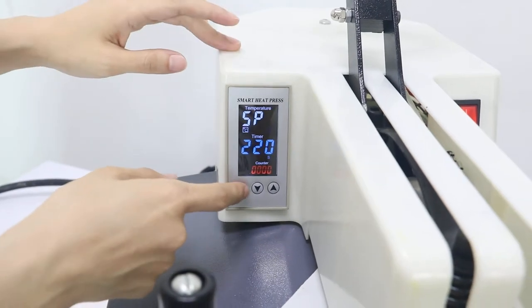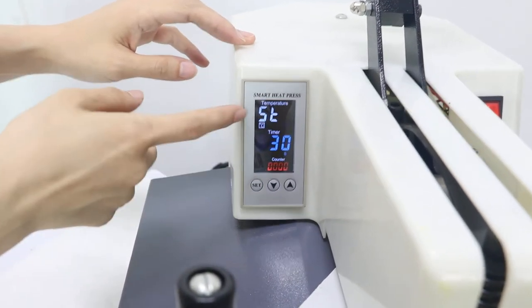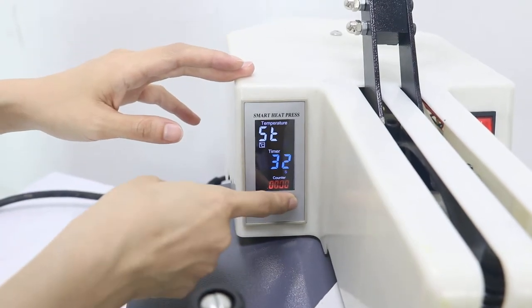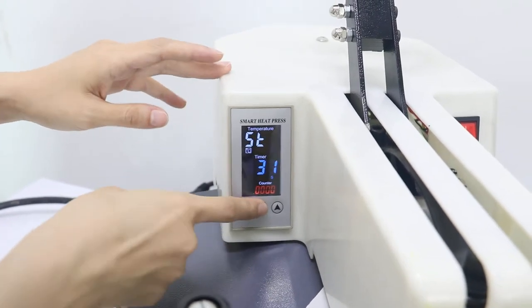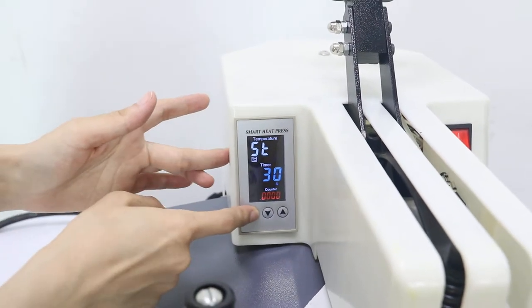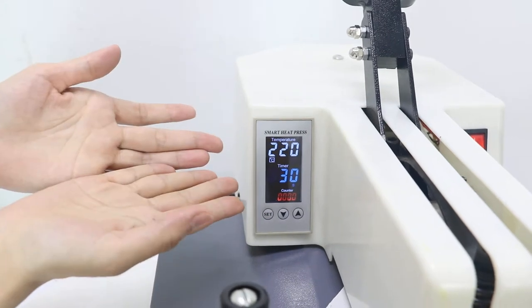And then we press this button second time. File reverse F means time setting mode. Now we can press this up idle to increase time and this down idle to decrease time. And then we press this SD button third time. The setting is finished.